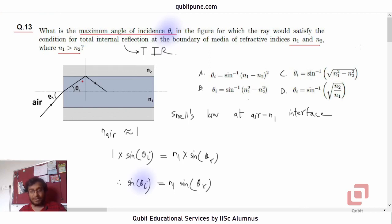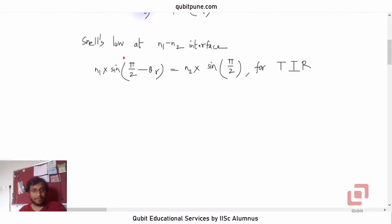Therefore now use trigonometry. Sine of pi/2 minus theta_r is cosine of theta_r. So what will be cos theta_r? Cos theta_r will be n2 by n1.